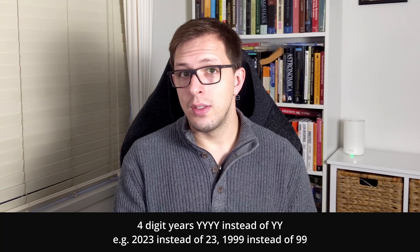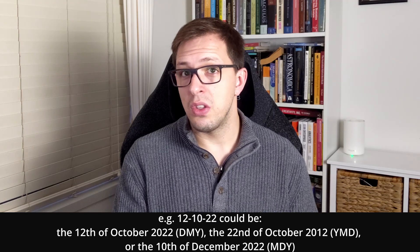I also use four digits for the year to further avoid this confusion. If I use double digit years, this date could mean the 12th of October 2022, the 22nd of October 2012, or the 10th of December 2022. Also consider if you want to separate the components of the date for readability using underscores or hyphens like this on the screen now.